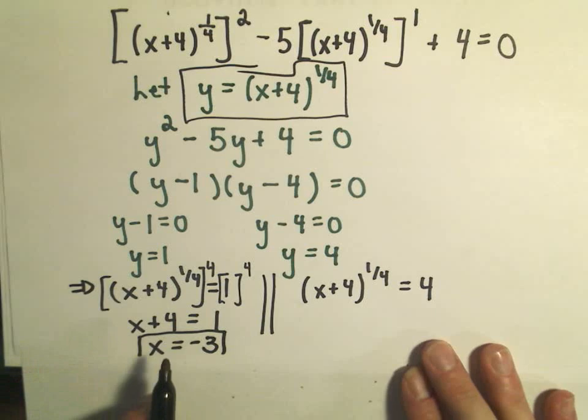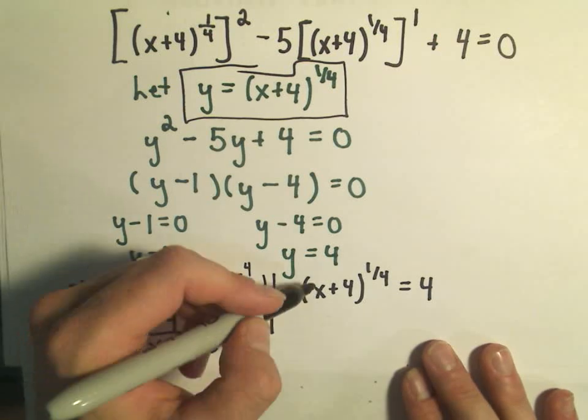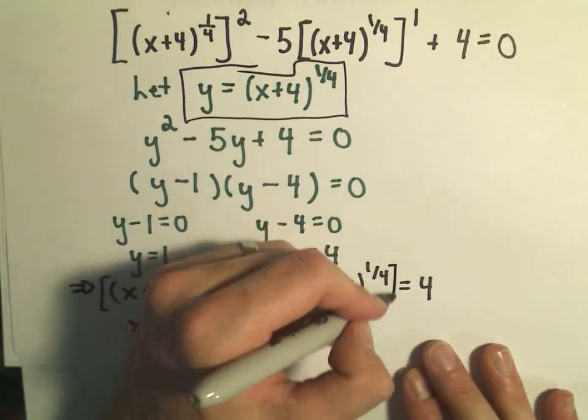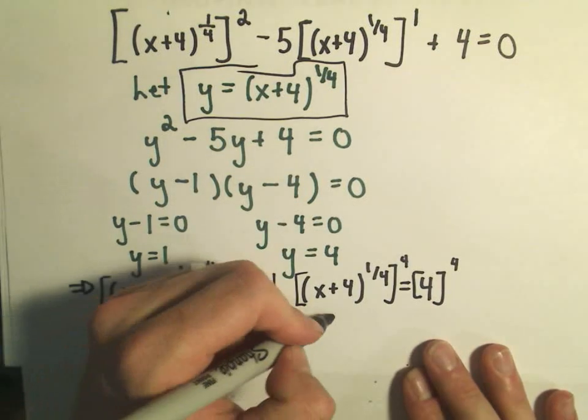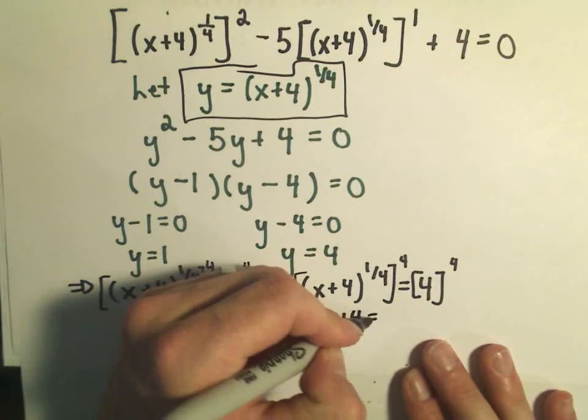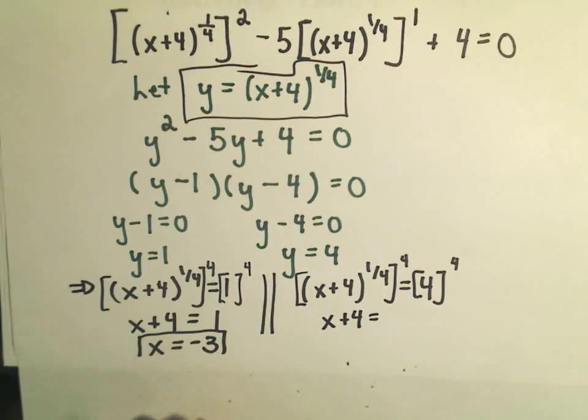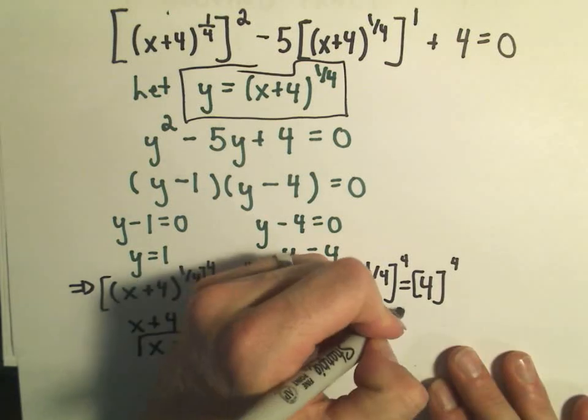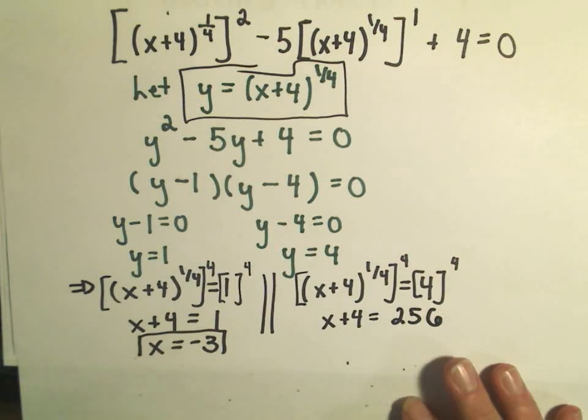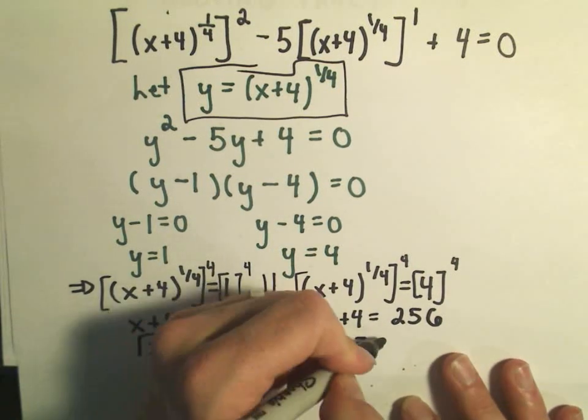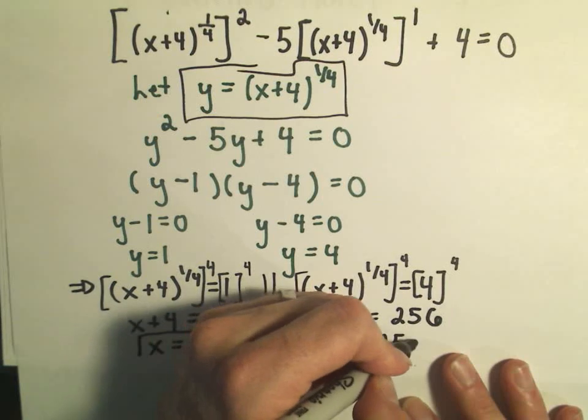And on the other one, I should say potential solutions, because we could actually pick up extraneous solutions. We should really go back and check these. Likewise, on my other problem, I'm going to have to raise both sides to the fourth power. So we'll have x plus four left on the left side. Four to the fourth, that's kind of a big number, so that's 16 squared. And I do believe 16 times 16 is 256. And then again, we can simply subtract four from both sides. And if we subtract four, we'll get x equals 252.